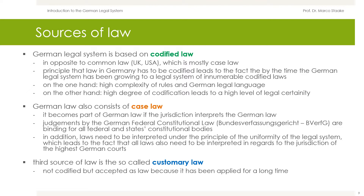German law is not only case law — it also consists of case law. Case law becomes part of German law if the jurisdiction interprets German law. It is a controversial issue whether this case law is a source of law or just an aid of interpretation of German law. Nevertheless, judgments by the German Federal Constitutional Court, the Bundesverfassungsgericht, are binding for all federal and state constitutional bodies.